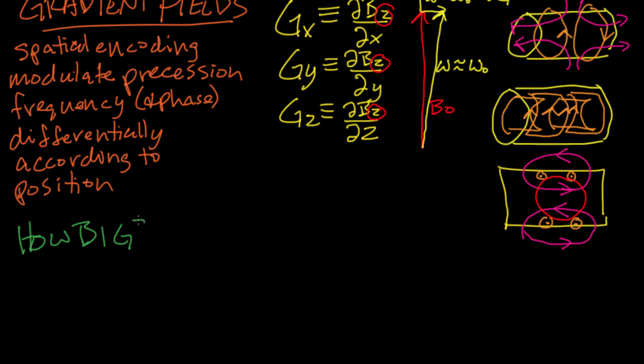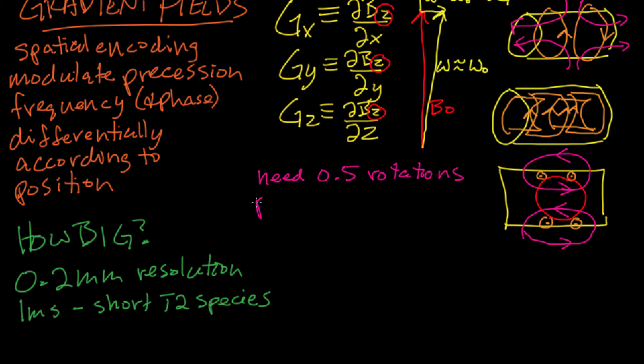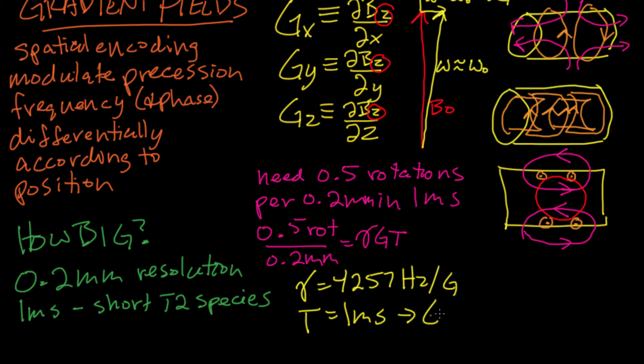Okay, so let's get an idea of how big we would like those gradients to be. So let's say we want to do a scan with 0.2 mm spatial resolution, that's very high resolution, and we want to achieve that resolution in about a millisecond, because there are some short T2 species that require very fast scanning like that. The Fourier sampling theorem says we need a half a rotation per pixel. So a half a rotation per 0.2 mm is our k-space excursion. That equals gamma times the gradient times time. Gamma is about 4 kHz per gauss for protons. So for a time of one millisecond, we need a gradient of about 5 gauss per centimeter, which is about what modern systems can produce.